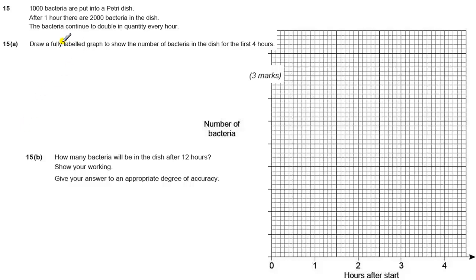Question 50. Here we have a question with a graph. We start with 1000 bacteria put into a petri dish. After one hour there are 2000 bacteria in the dish. The bacteria continue to double in quantity every hour. Draw a fully labeled graph to show the number of bacteria in the dish for the first four hours.